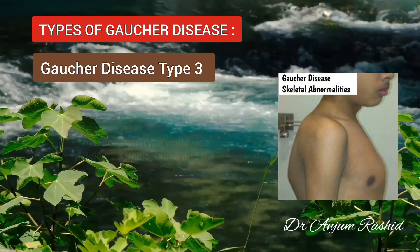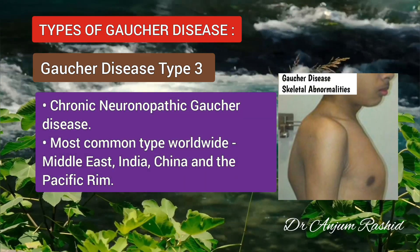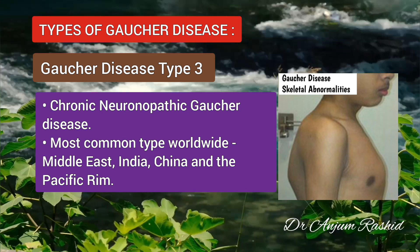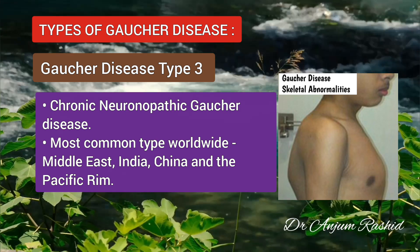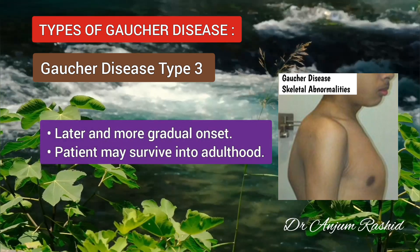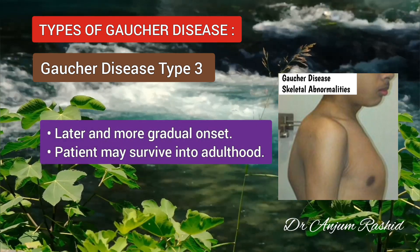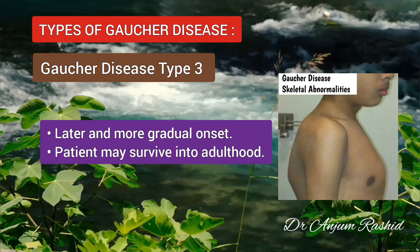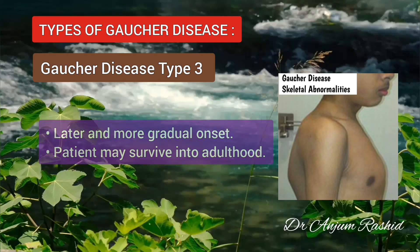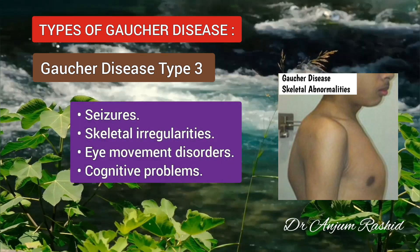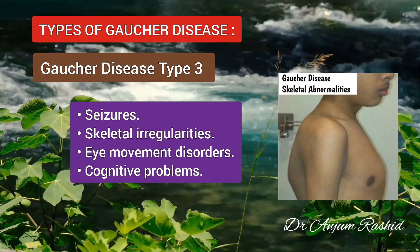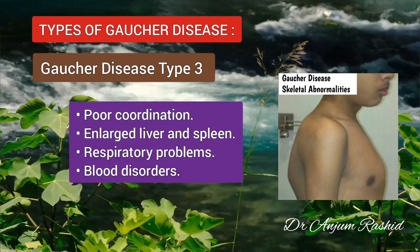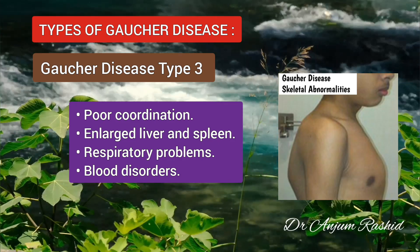Gaucher disease type 3, also known as chronic neuropathic Gaucher disease, is the most common type worldwide, more common than type 1 in the Middle East, India, China and the Pacific Rim. It has a later and more gradual onset compared with type 2, and people may survive into adulthood. Major signs include seizures, skeletal irregularities, eye movement disorders, cognitive problems, poor coordination, enlarged liver and spleen, respiratory problems and blood disorders.